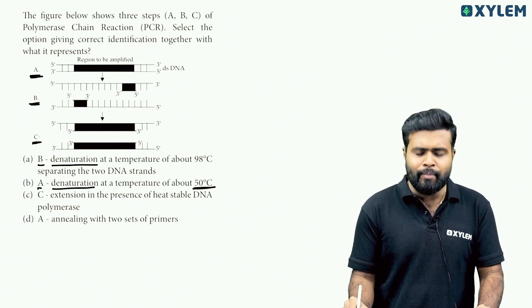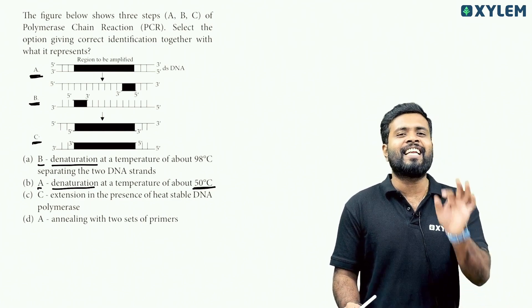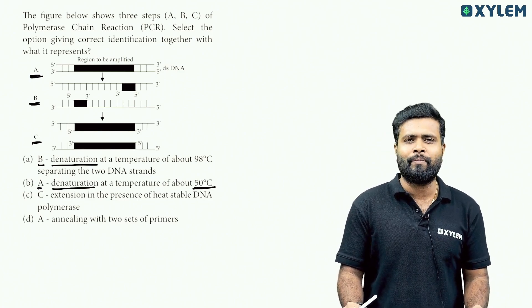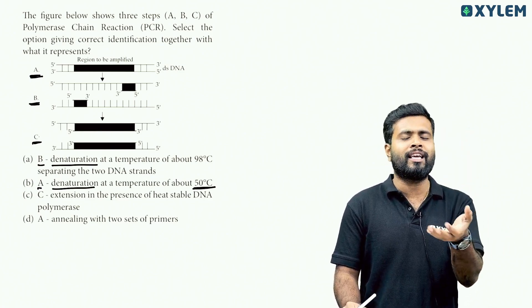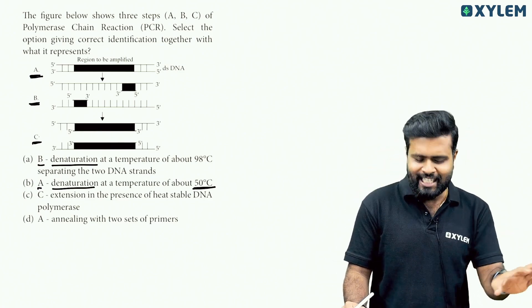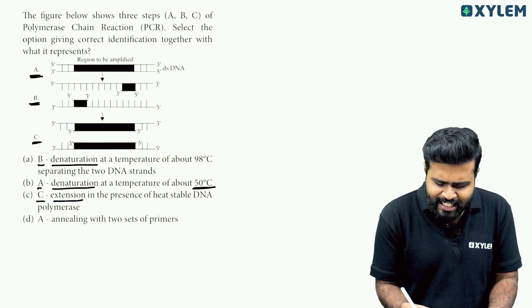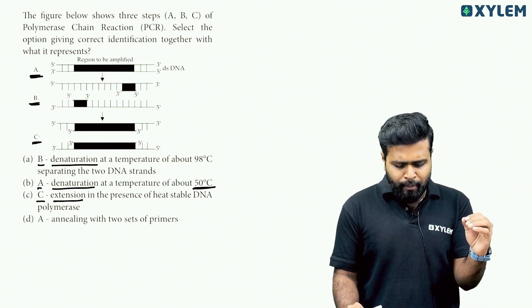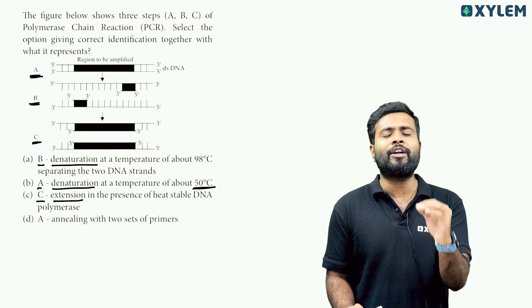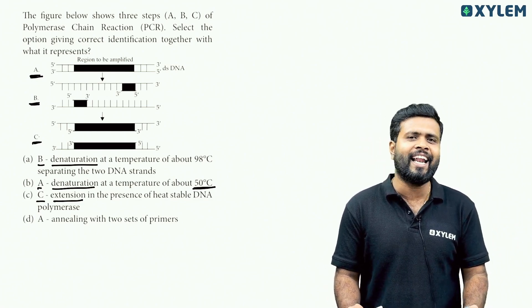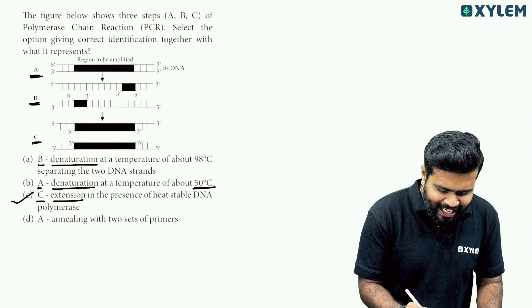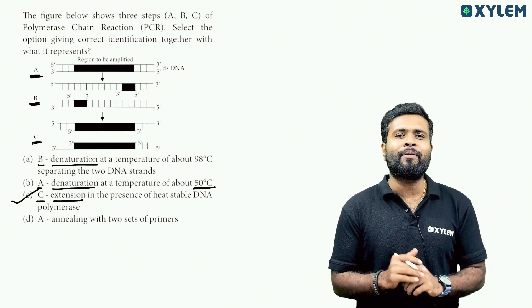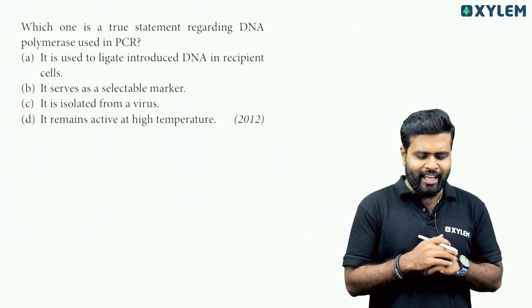A - denaturation at a temperature of about 95 degrees Celsius. Then B at 92 degrees Celsius. Then C - extension in the presence of heat-stable DNA polymerase. Heat-stable Taq polymerase enzyme. So C is the correct answer.